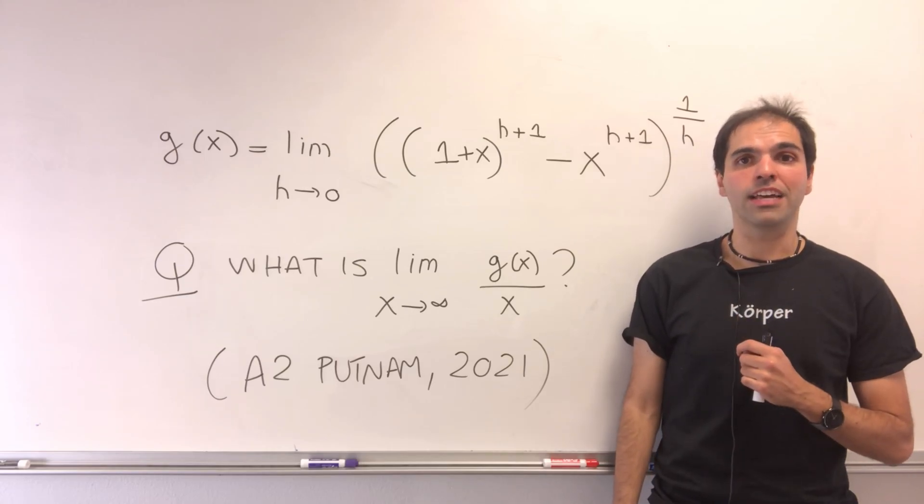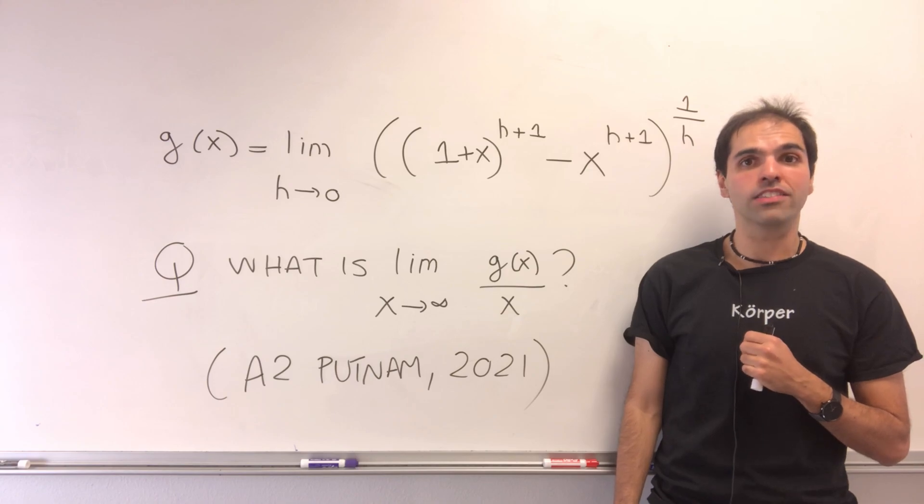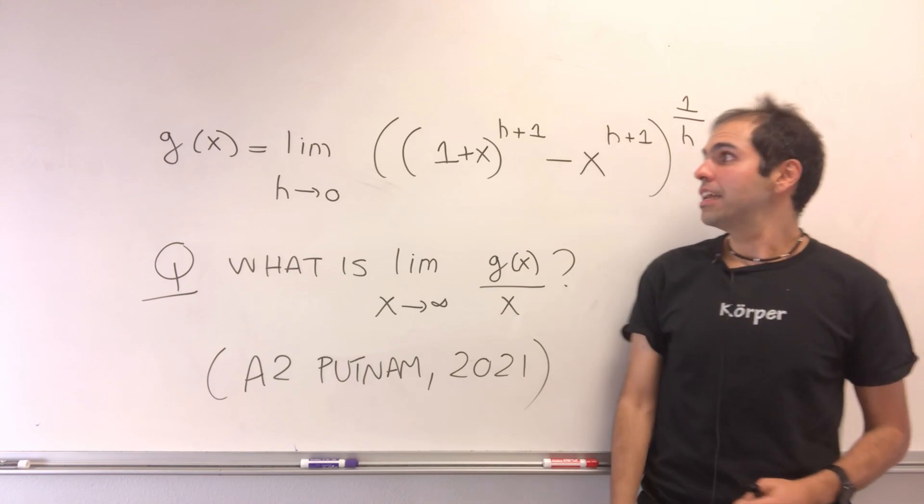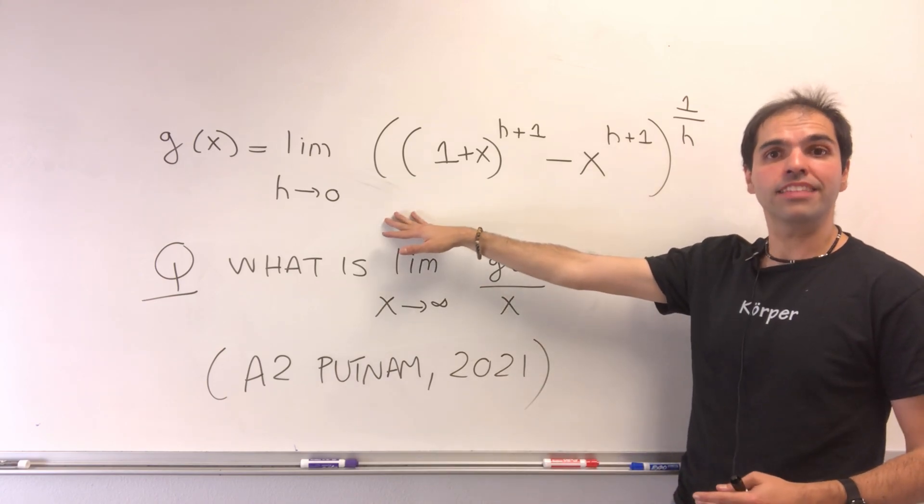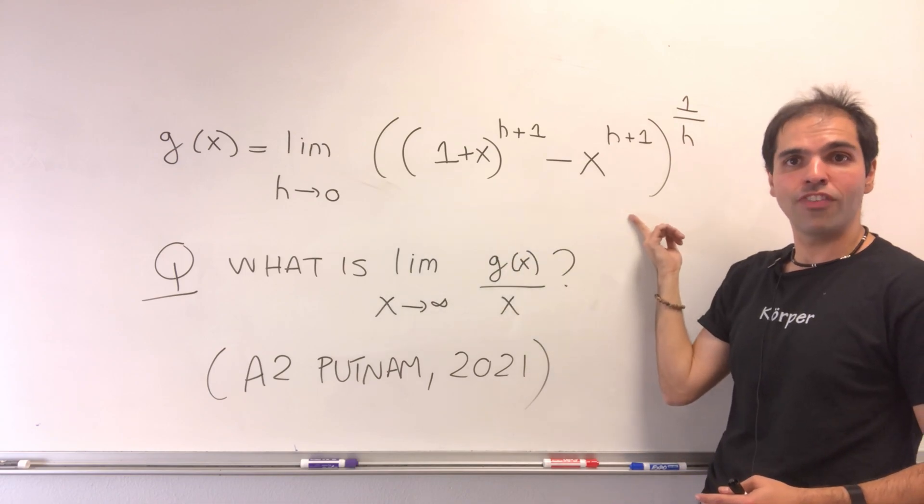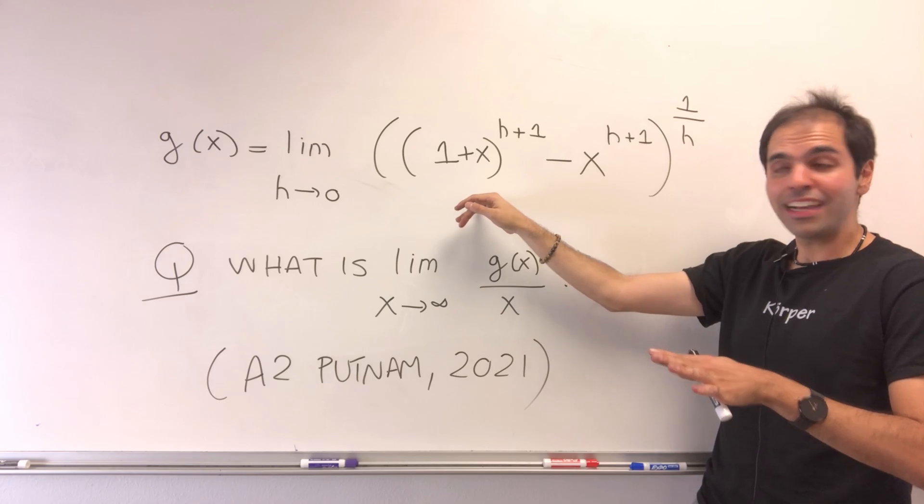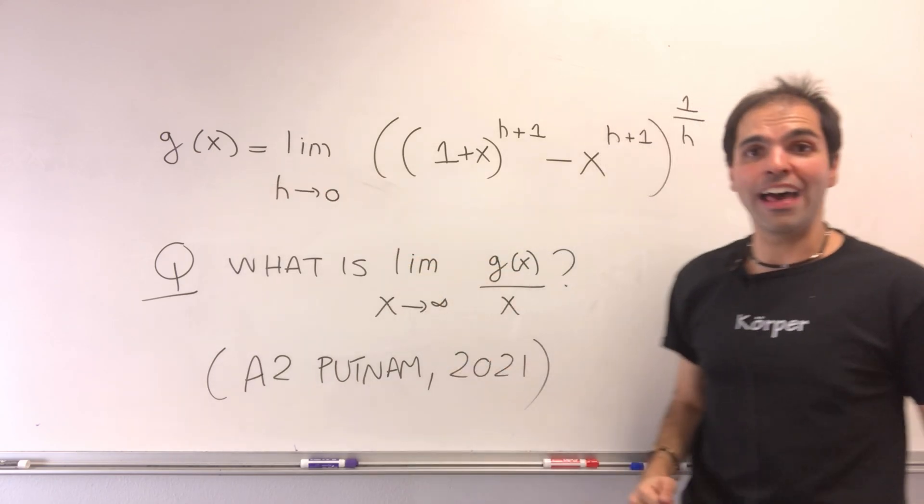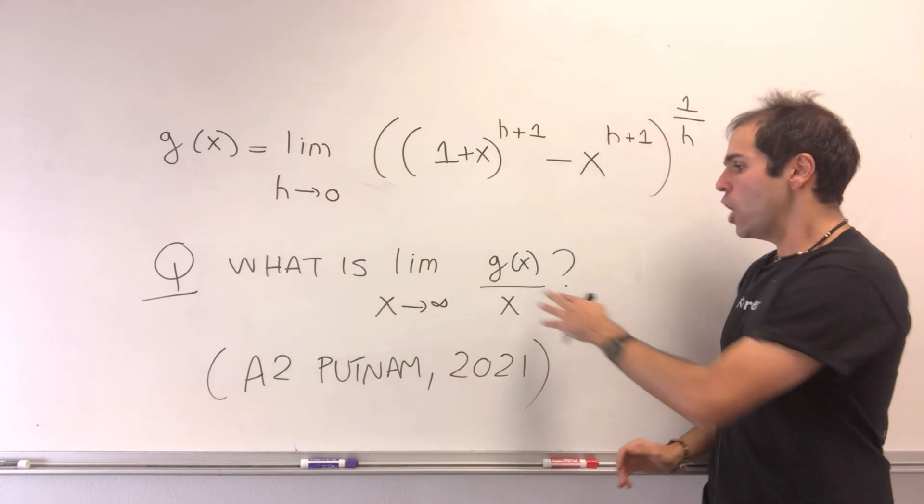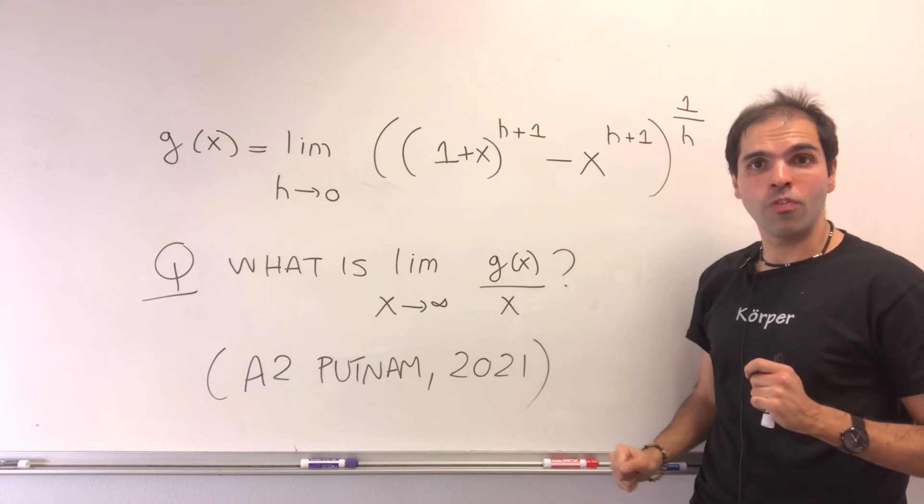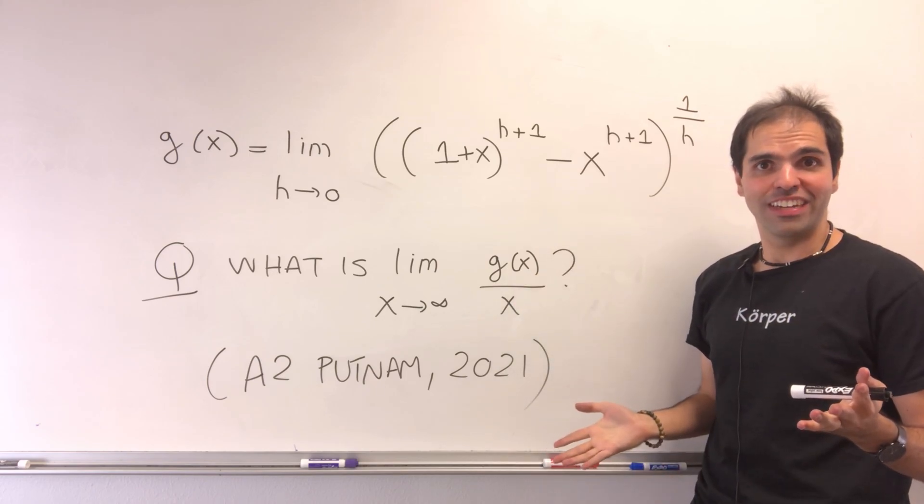Today I want to solve a beautiful Putnam problem that even a Calc 1 student can do. Consider the limit as h goes to zero of this function. This limit just depends on x, so let's call it g of x. And the question is, what happens to g of x over x as x goes to infinity?